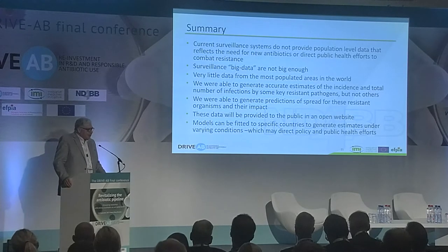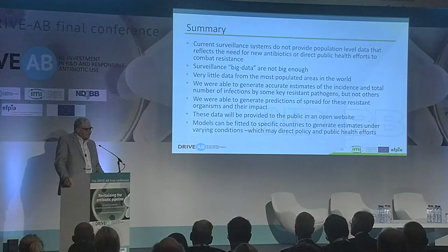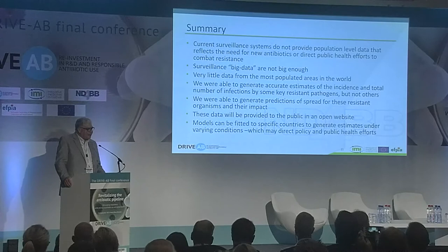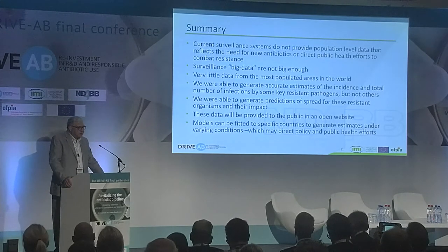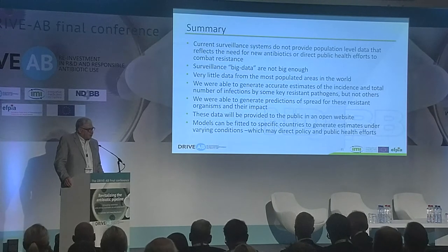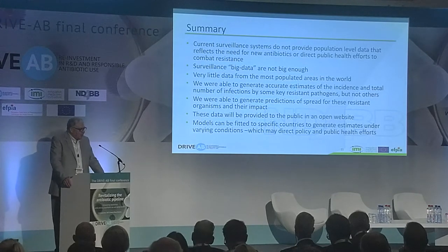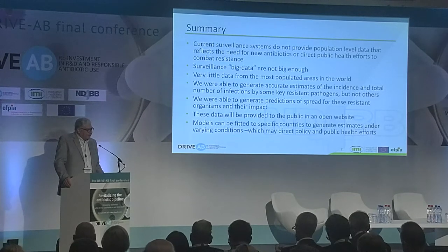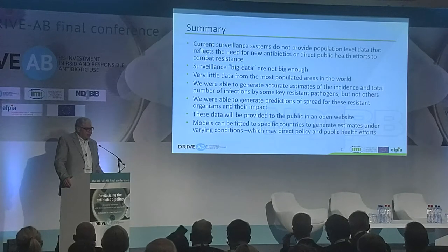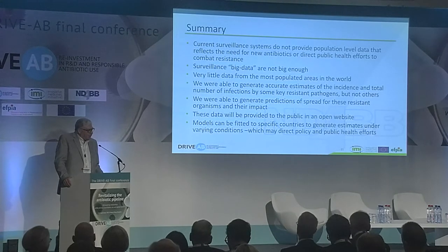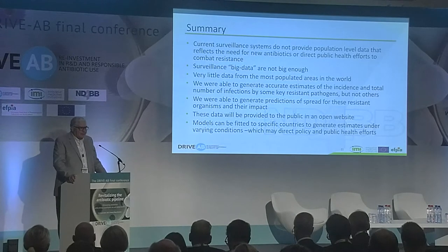To summarize: current surveillance systems do not provide population-level data reflecting the needs for new antibiotics or public health efforts to combat resistance. Big data are not big enough to do good analysis. Very little data from the most populated areas in the world is available — in some places, zero data. We were able to generate accurate estimates of the incidence and total number of infections by some key resistant pathogens, but not others. We generated predictions of spread for these resistant organisms and their impact. These data will be provided to the public in an open website, and models can be fitted to specific countries to generate estimates under varying conditions, which may direct public health policy.